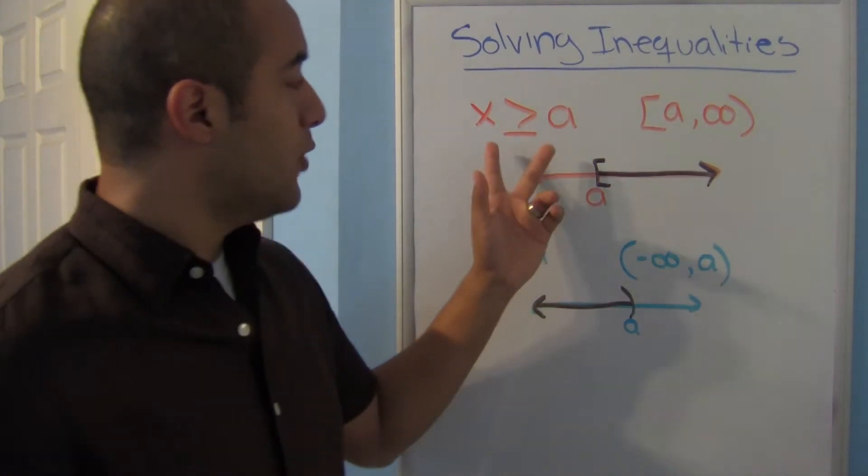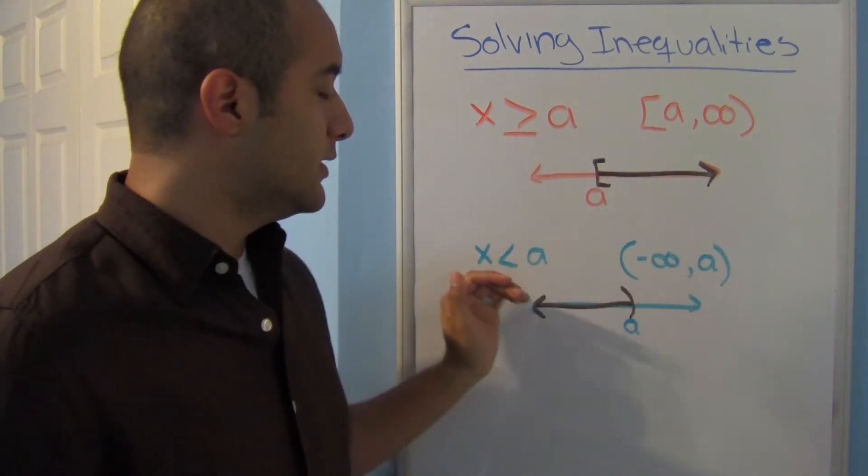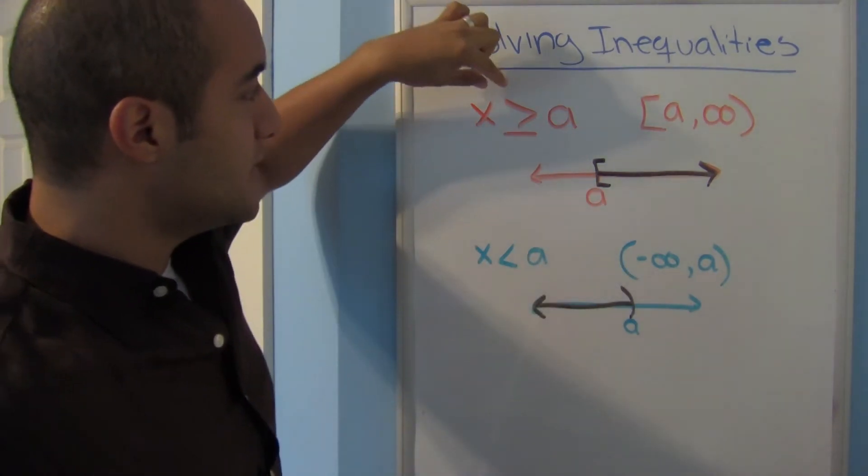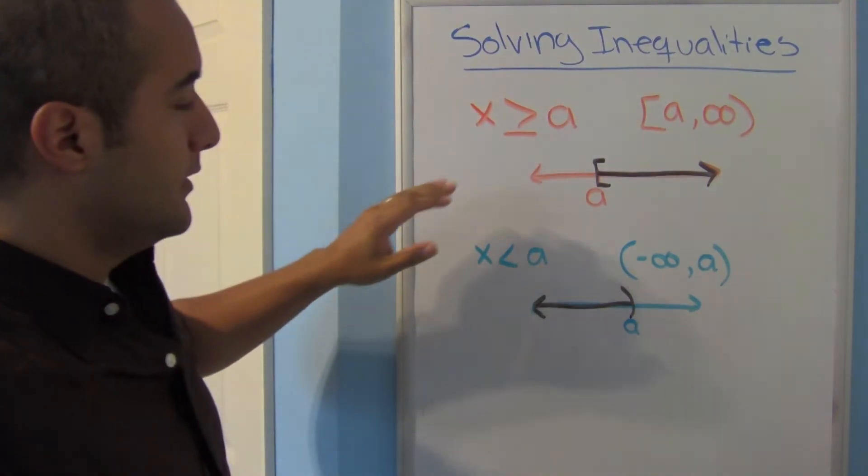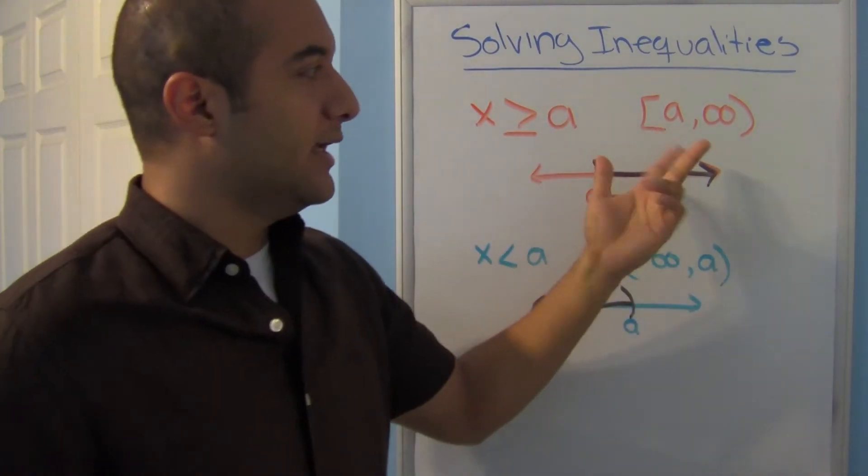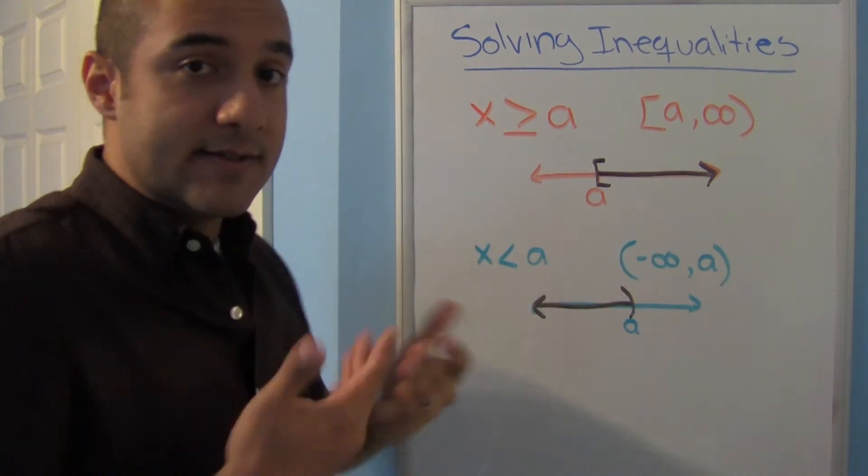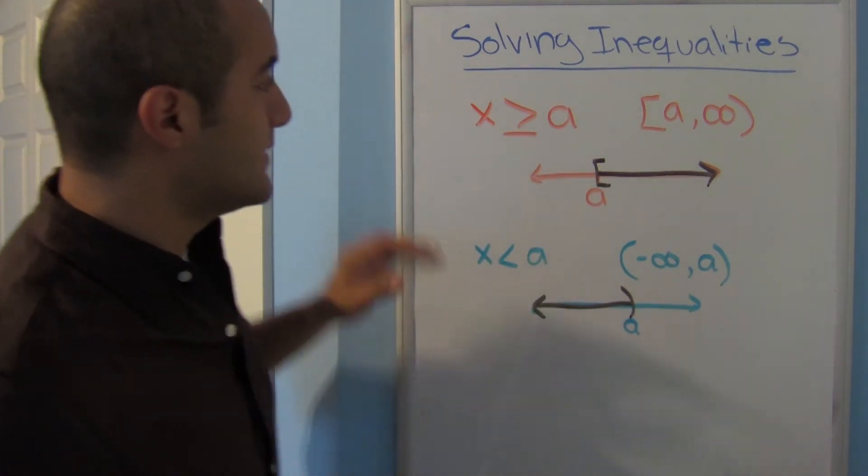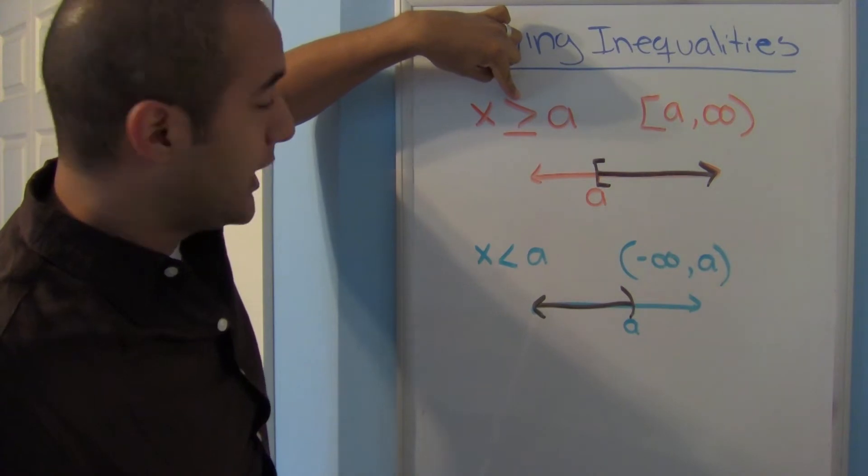Alright, here we're looking at the inequality notation and the interval notation when you have infinities. Now notice that when I change this to interval notation how I wrote it. Let's think about why it looks like it flip-flopped.